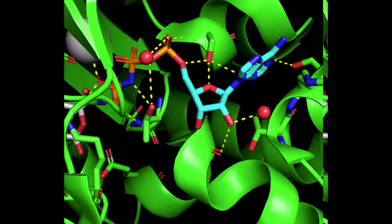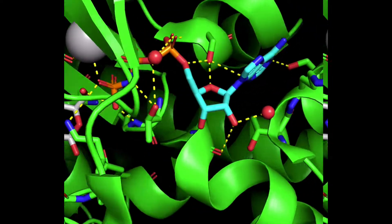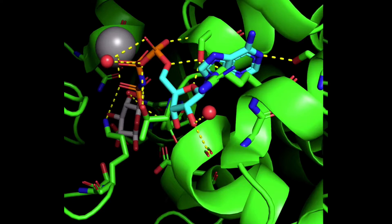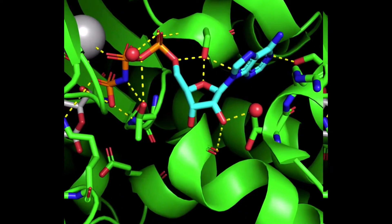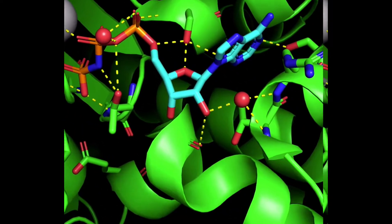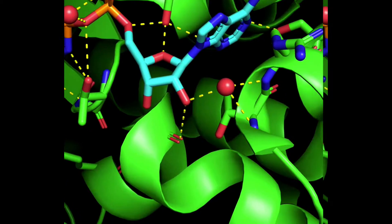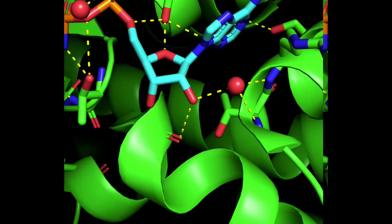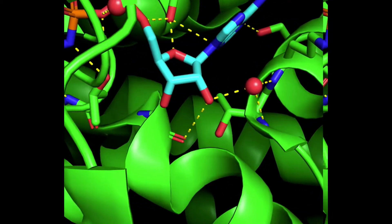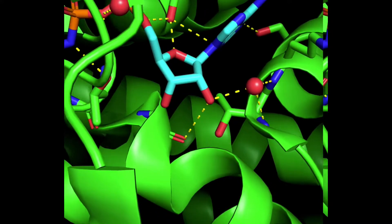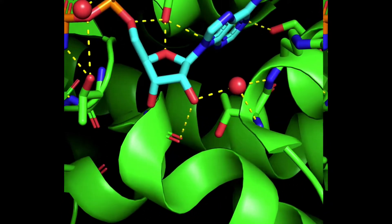Now here's ANP. It's also making hydrogen bonds to nearby amino acids. But here it's making a bond to a red sphere. That red sphere is a water molecule, and the water makes hydrogen bonds with the backbone of the enzyme. We call this a water-mediated hydrogen bond.